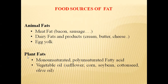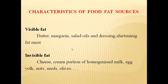The next category is plant fats. Plant fats contain monounsaturated fats and polyunsaturated fatty acids. Vegetable oils like sunflower oil, corn oil, soybean oil, cottonseed oil, and olive oil are all considered plant fats.